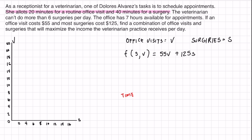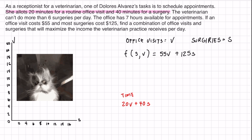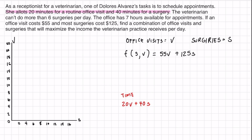The second sentence is where the fun starts: she allots 20 minutes per routine office visit and 40 minutes per surgery. That's all about time, so we write: 20v + 40s for the total time used. The next part — in a different color — says the vet can only do six surgeries a day, which we represent as s ≤ 6.